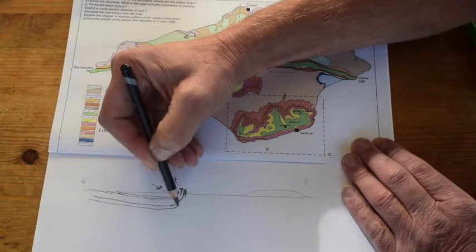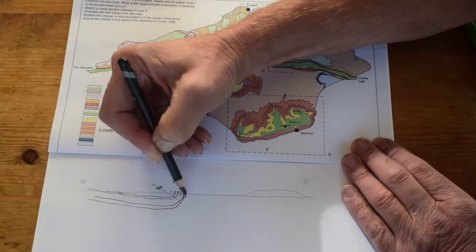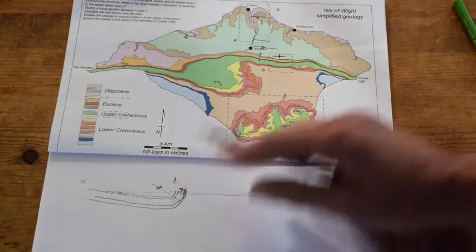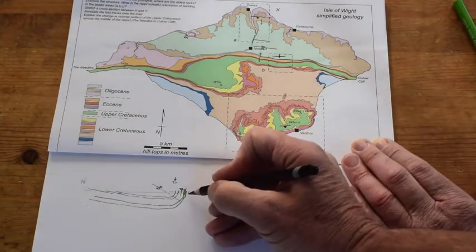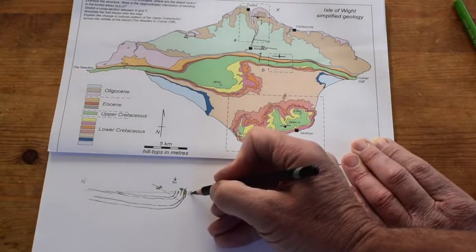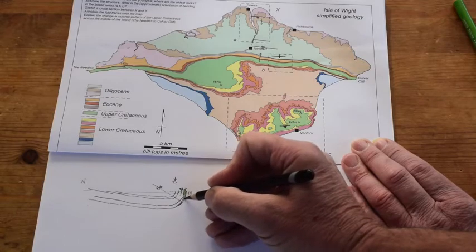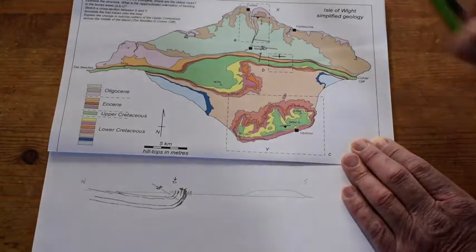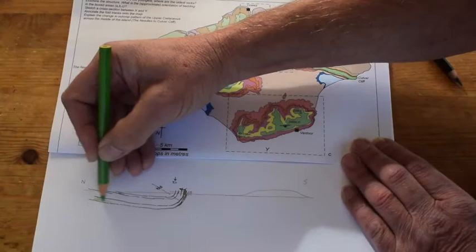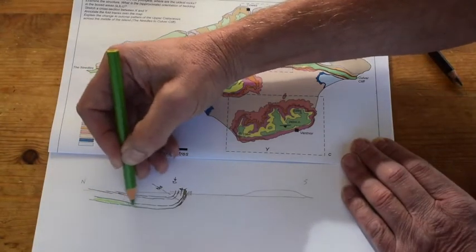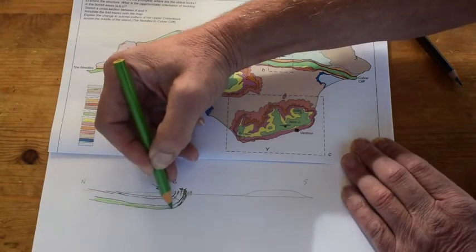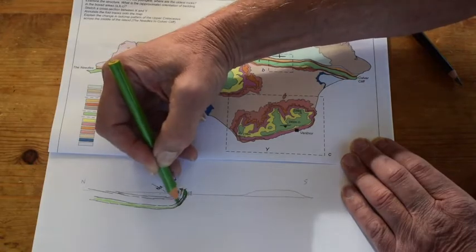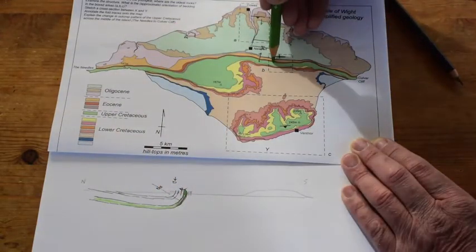And then some of the other Cretaceous rocks, the lower Cretaceous, sitting adjacent to it. That's a bit messy. Let's just tidy that up a bit and just color it in. So this is our upper Cretaceous strata coming around, standing on end as it goes through this ground.